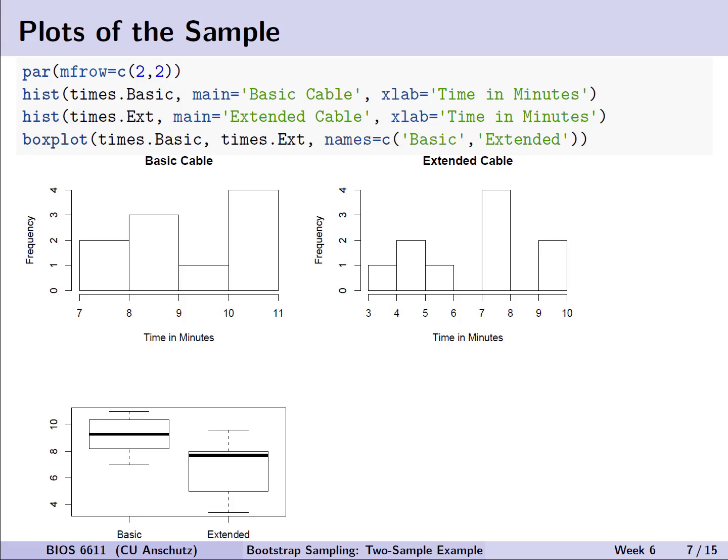We can also visually look at this with either histograms or potentially box plots in this case. And what we can see is that our basic cable has a tighter range of minutes relative to the extended cable, varying between 7 to 11 versus 3 to 10.